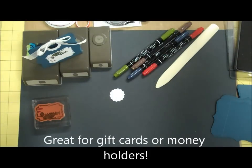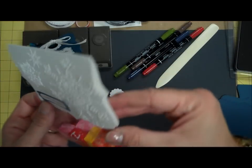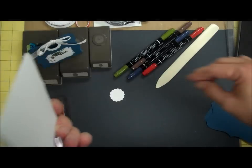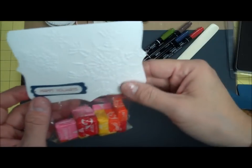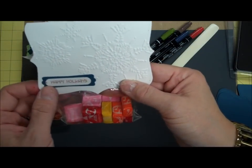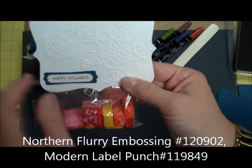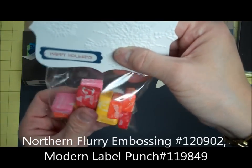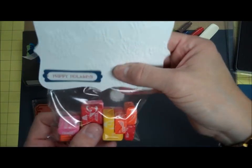This is how I always see them, this is one just scored down the center. I embossed it with my Northern Flurry, put a little sentiment on, and using the cello bags that we're selling, you can put some candy, and I'm going to use it as a favor bag.